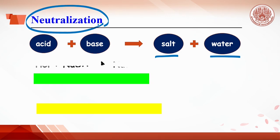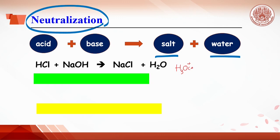For example, hydrochloric acid reacts with sodium hydroxide to produce sodium chloride and water. This reaction is an ionic reaction, so we can write it as hydronium ion — or hydrogen ion — reacting with hydroxide ion in aqueous solution to produce liquid water.